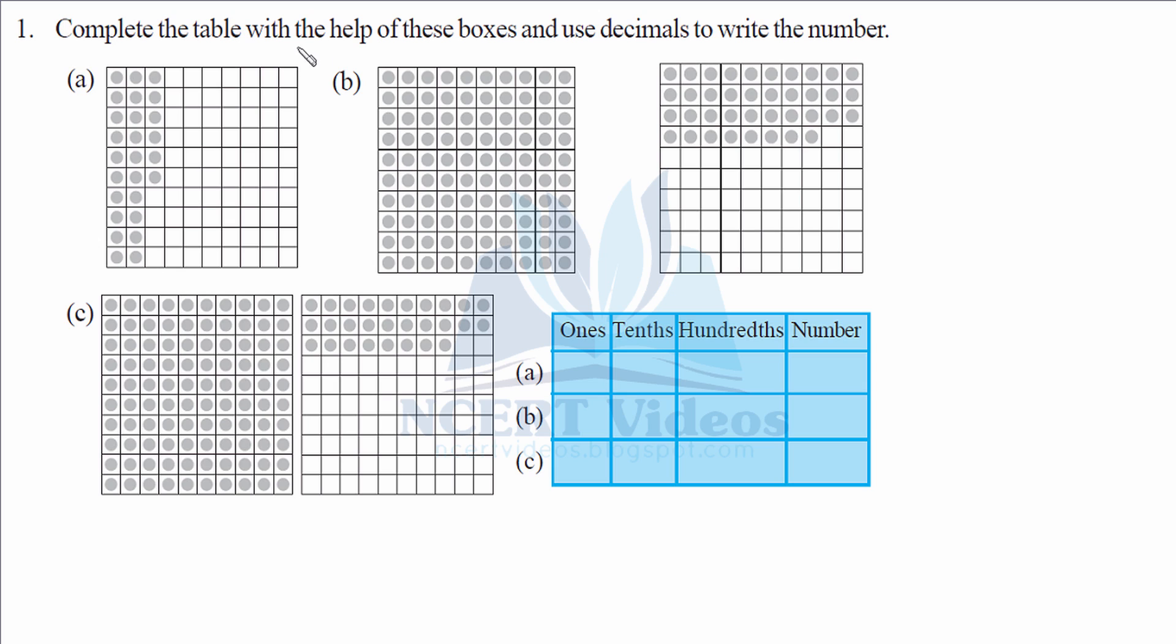Question 1. Complete the table with the help of these boxes and use decimals to write the number. If you are given boxes containing 100 points respectively, writing it as 10 horizontally and vertically - that makes 10 into 10 equals to 100 squares.